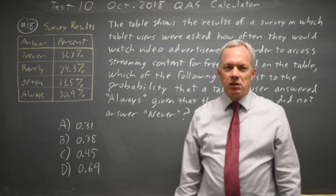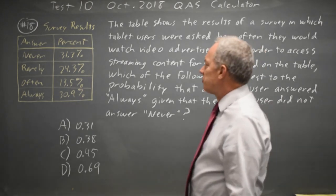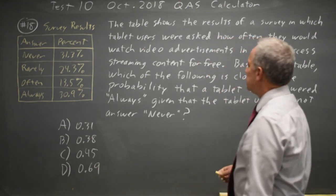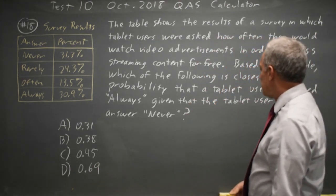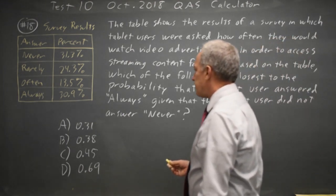This is question 18. The College Board is asking for a probability from a table as they often do, in particular the probability that the tablet user answered always, given that the tablet user did not answer never.